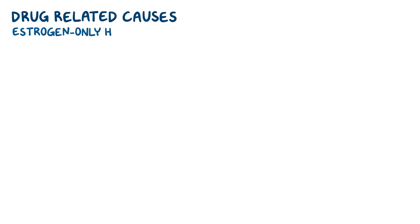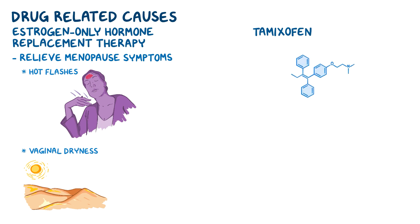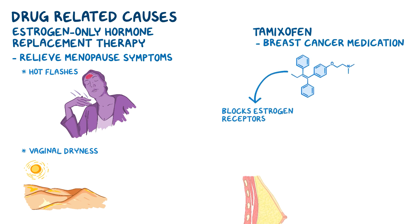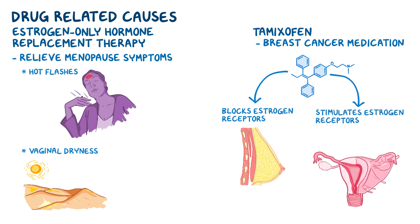We also have drugs that can cause endometrial hyperplasia, such as estrogen-only hormone replacement therapy, usually taken by postmenopausal females to relieve menopause symptoms such as hot flashes and vaginal dryness. Endometrial hyperplasia can also be caused by tamoxifen, a breast cancer medication which blocks estrogen receptors on the breast, but at the same time stimulates those on the endometrium.